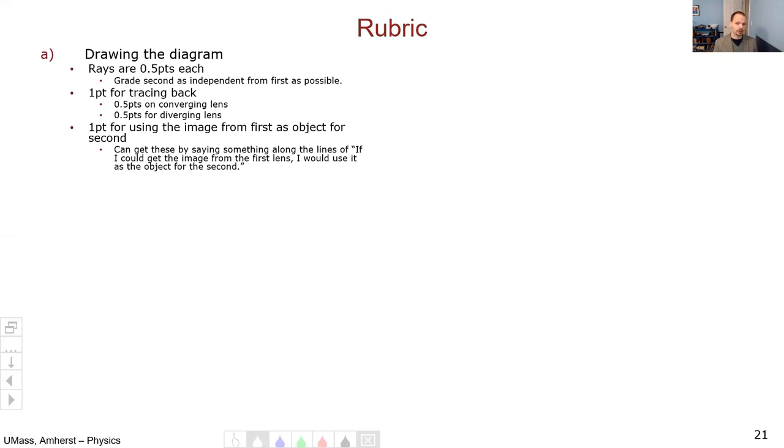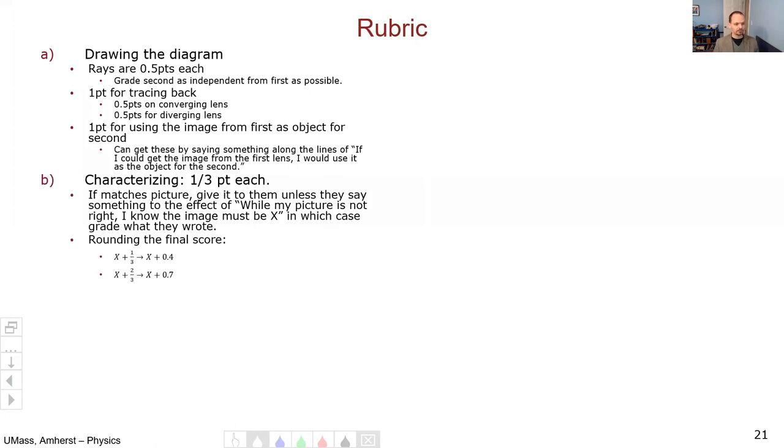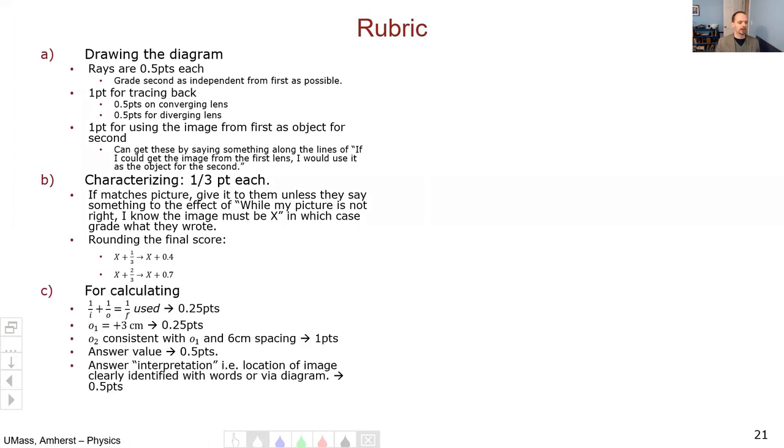How was this problem graded? For the diagram, rays were half a point each, which adds up to three total. Six rays, half point each gives you three. One point for tracing back, which you had to do twice, so half a point each time. One point for using the image from the first lens as the object for the second. You could have gotten this point by saying if I could get the image from the first lens, which I don't know how to do, I would then use it as the object for my second. Characterization was a third of a point each to get the two points. Calculating broke down like this. You will notice that this only adds to nine and a half instead of the promised 11. Newsflash, I can't do arithmetic, we've known that all semester.